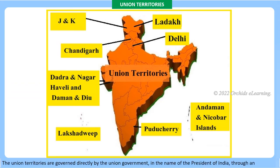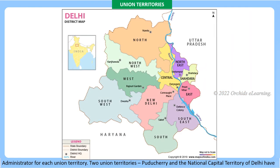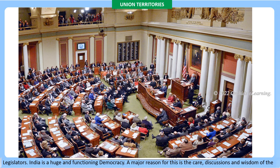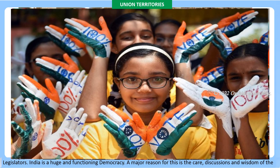Union territories are governed directly by the union government in the name of the President of India through an administrator for each union territory. Two union territories — Puducherry and the National Capital Territory of Delhi — have their own legislatures. India is a huge and functioning democracy, and a major reason for this is the care, discussions, and wisdom of the members of the Constituent Assembly.